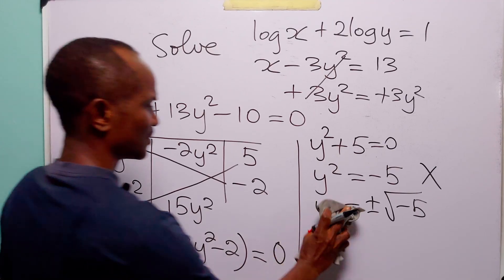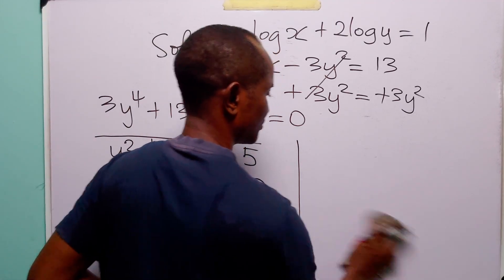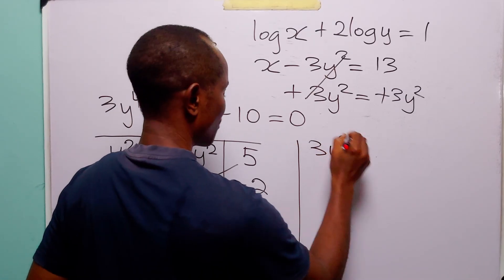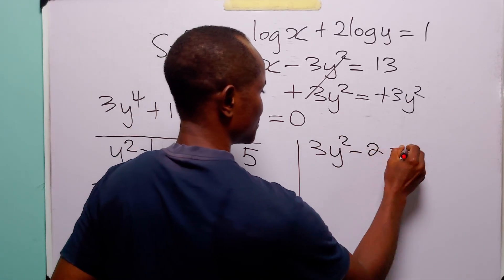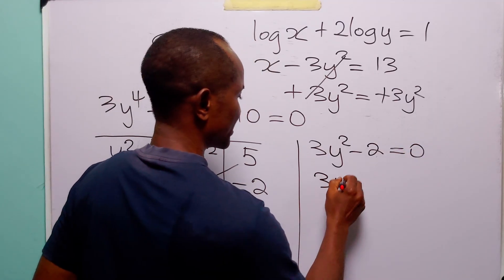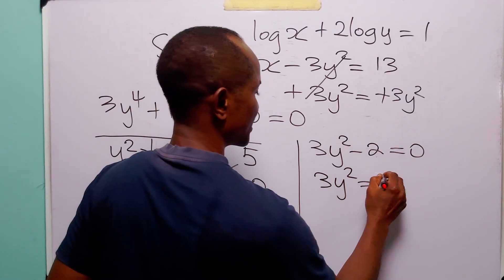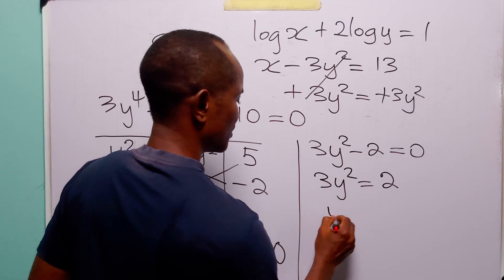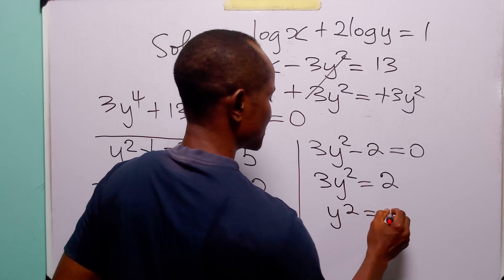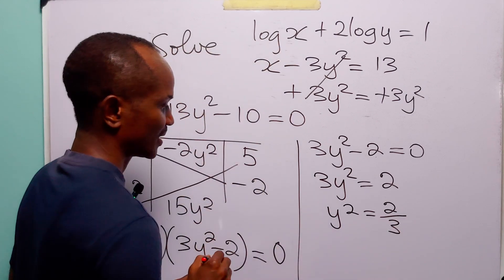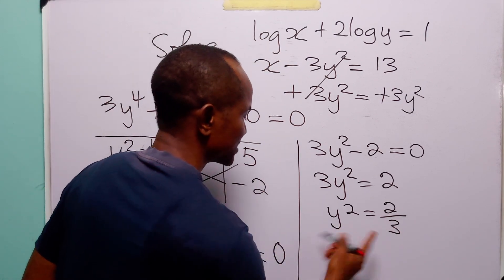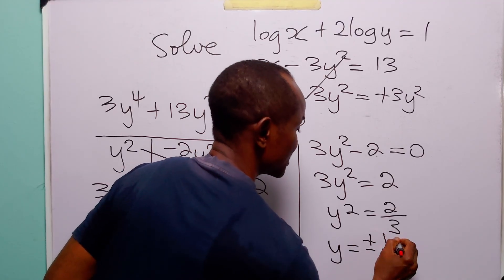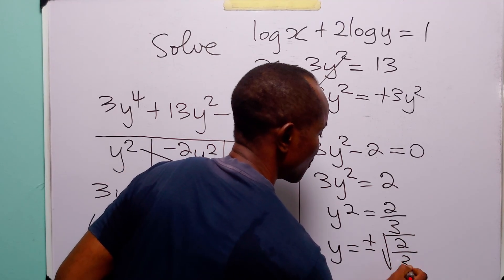Let us consider the other equation. We have that 3y squared minus 2 is equal to 0, from where 3y squared is equal to 2. And dividing both sides by 3, we have that y squared is equal to 2 over 3. Taking square root of both sides, we have that y is equal to plus or minus the square root of 2 over 3.